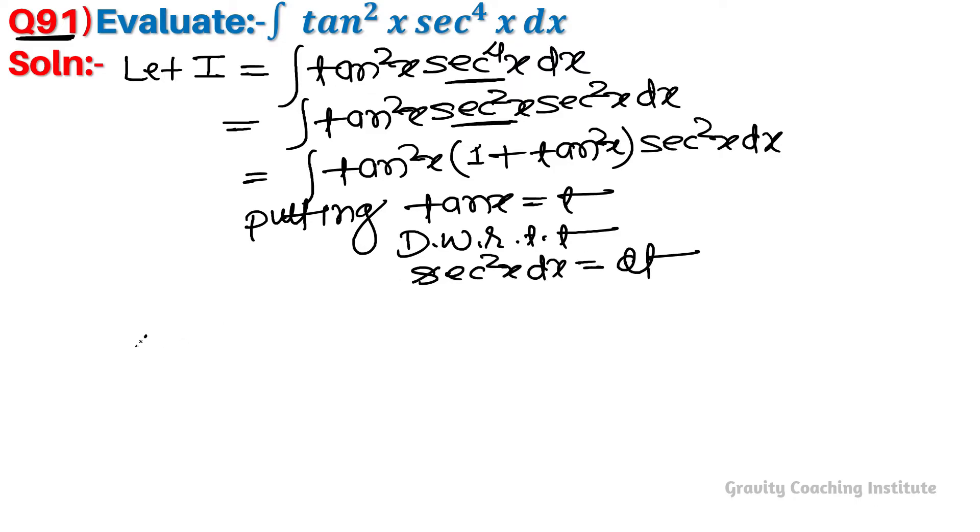Therefore I equal to integration - tanx we take as t - t² into (1 + t²), and sec²x dx becomes dt. Then we will multiply this t²...